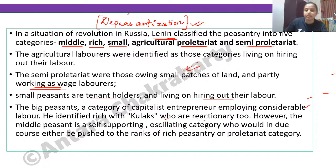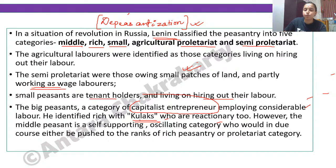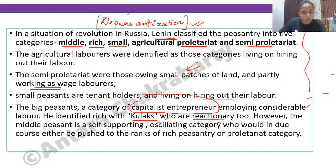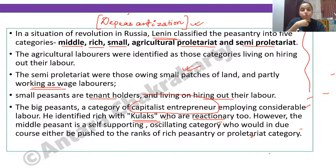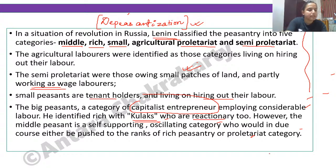Semi-proletariat are those who own small patches of land but partly work as wage laborers on others' land. Small peasants are tenant holders who hire out their labor — they don't own land and are essentially renters. Big peasants are capitalist entrepreneurs, whom Lenin called 'kulaks' — please remember this term. Rich peasants, identified as kulaks, were seen as very reactionary.